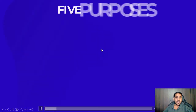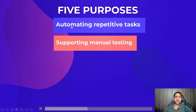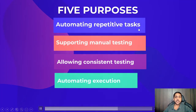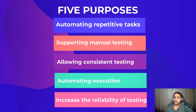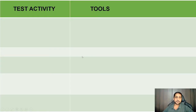So those are the five purposes: automating repetitive tasks, supporting manual testing, allowing consistent testing, automating execution, and increasing the reliability of testing. These are the five purposes you need to remember. Now we move on to the classification part.